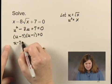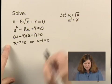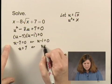So u minus 7 equals 0, or u minus 1 equals 0. So u equals 7, or u equals 1.